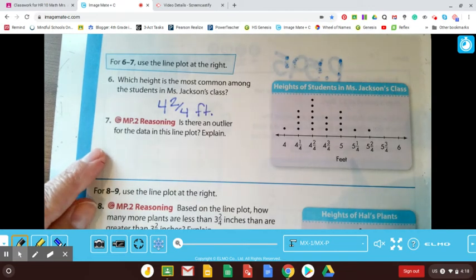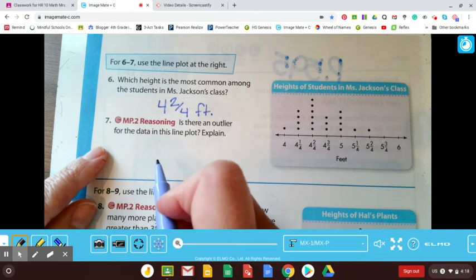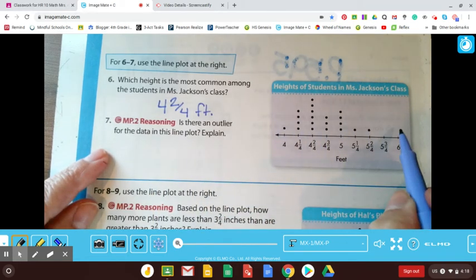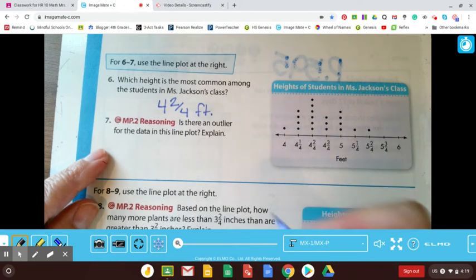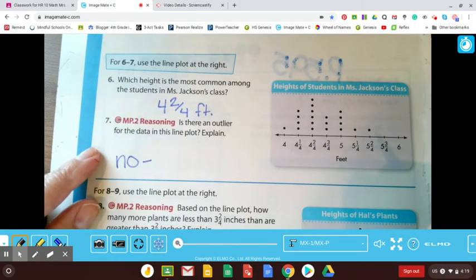And is there an outlier for the data in this line plot? And I'll be honest, like if I'm looking, there really isn't anything that is kind of set itself aside or different, or that varies from the other heights. So I'm going to say no, because there's nothing that's far away.